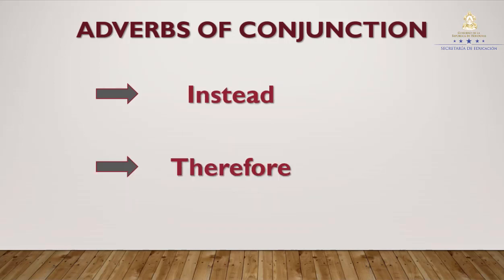Here we have another adverb of conjunction. El primero es instead. Instead se usa para expresar una sustitución o una alternativa de algo más. Y el segundo es therefore. Este se usa para expresar una consecuencia, ya sea buena o mala, de algo que ya se expresó previamente. Repeat after me. Instead. Therefore. Great.